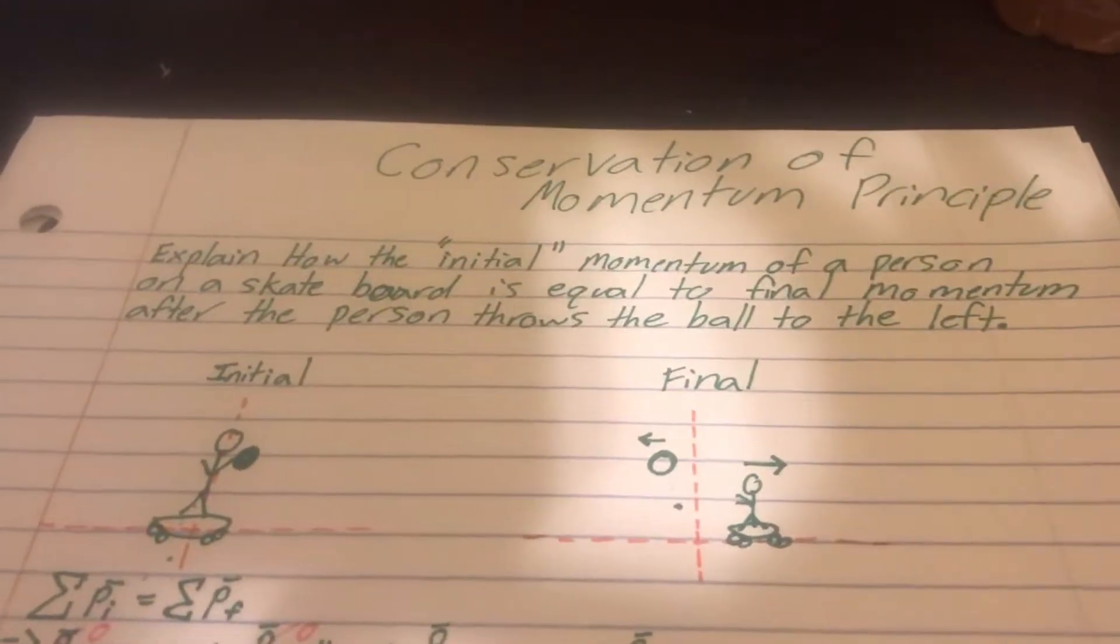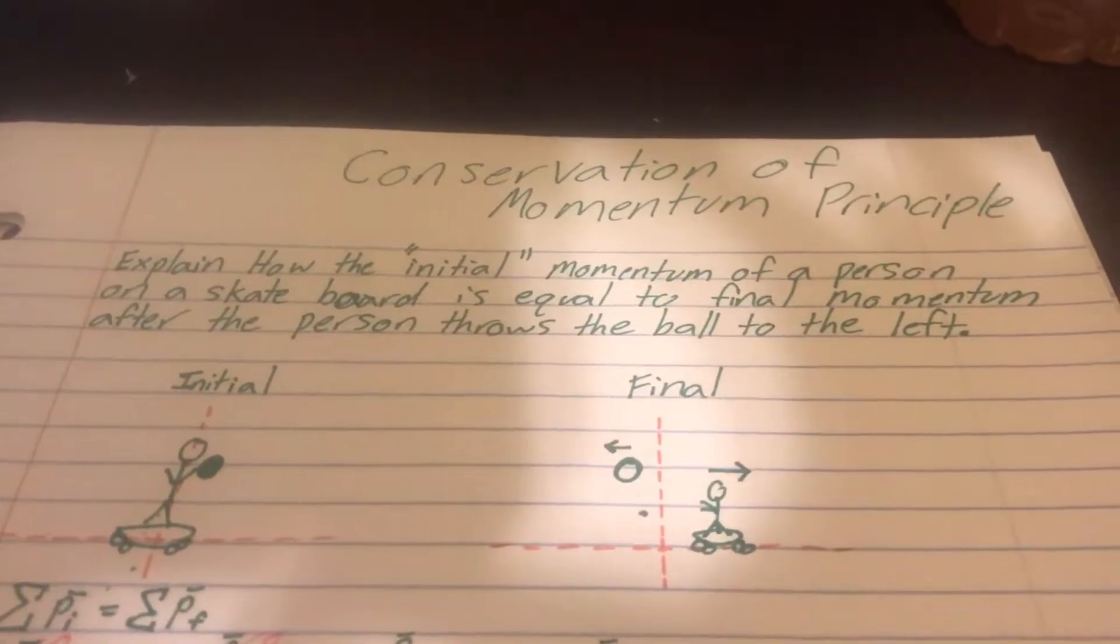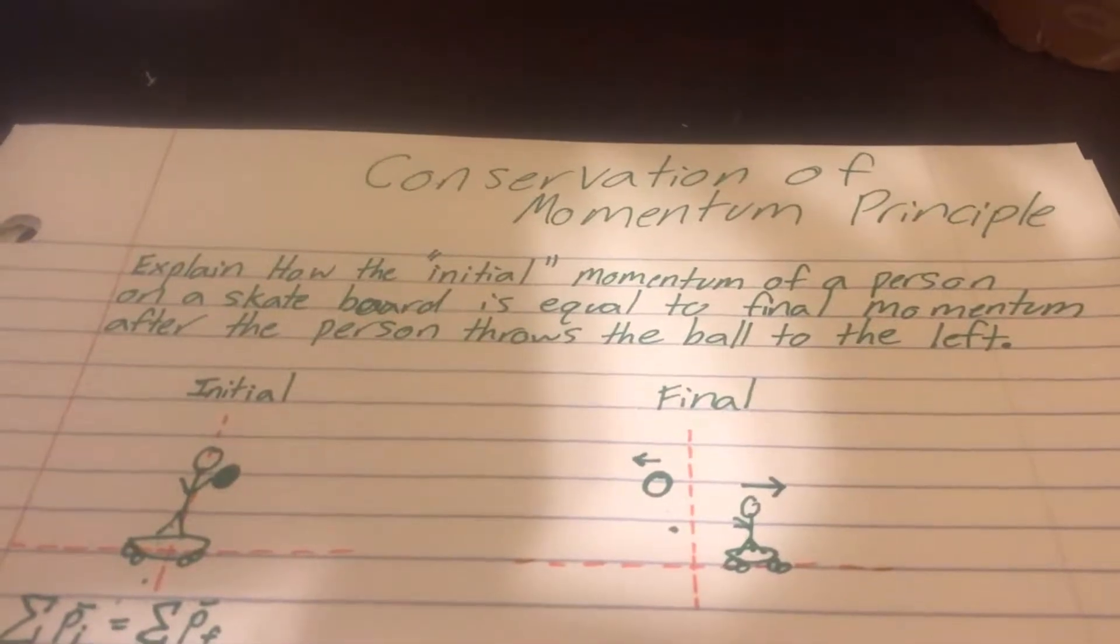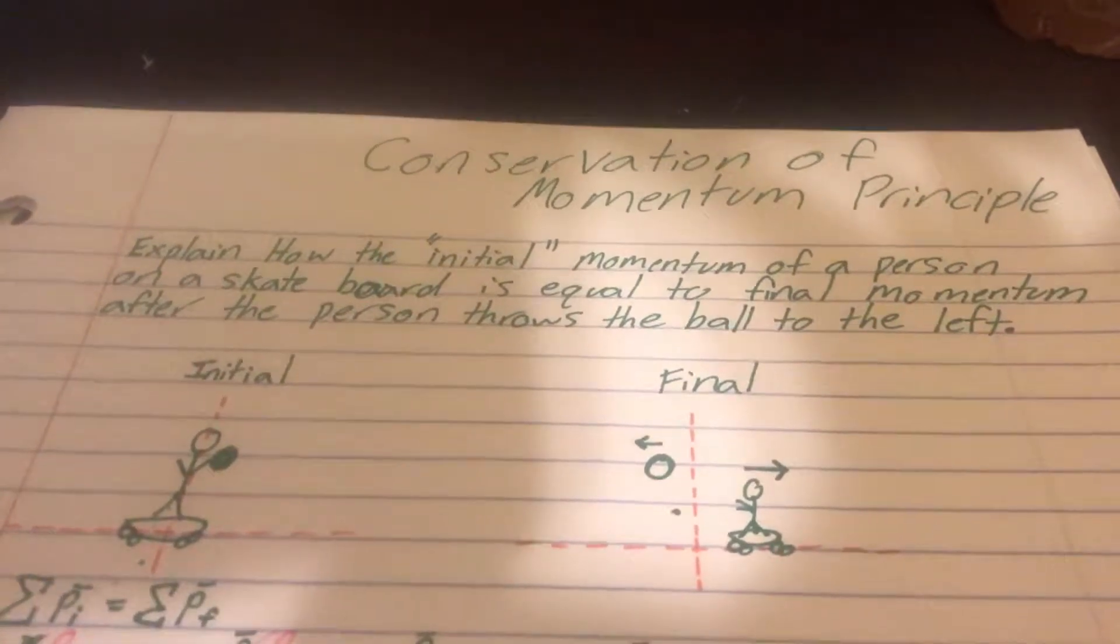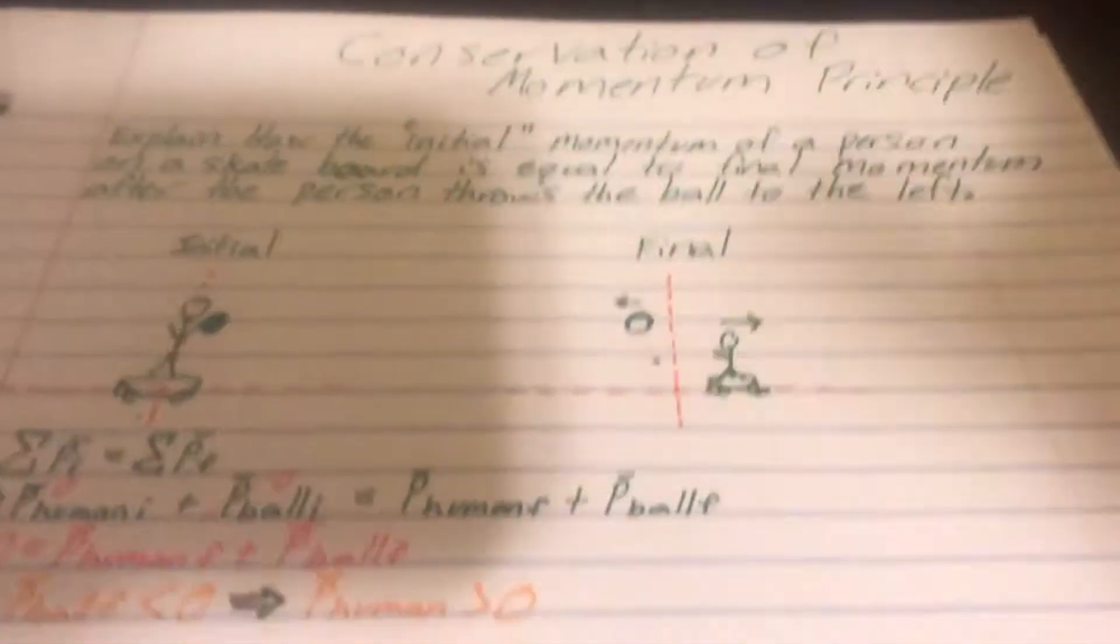This is the conservation of momentum principle. Explain how the initial momentum of a person on a skateboard is equal to the final momentum after the person throws the ball to the left.